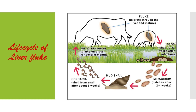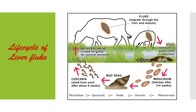Some larval stages occur in the snail's body, and finally Cercaria larvae come out of the snail. These free-swimming Cercaria larvae settle on grass blades and become encysted. Such encysted larvae are called Metacercaria. If cattle or sheep feeds upon such grass, the Metacercaria enter the body of the primary host, hatching occurs in the intestine, and the larval form bores through the small intestinal wall, enters blood circulation, and reaches and settles in the liver or bile duct. Larval stages occurring in the snail include Sporocyst and Redia.